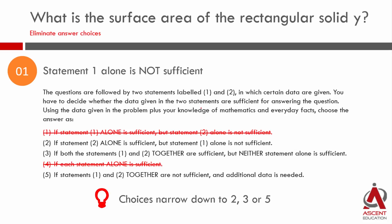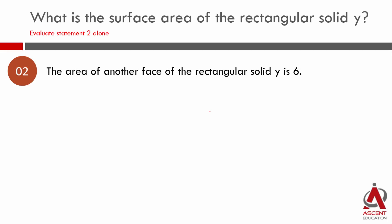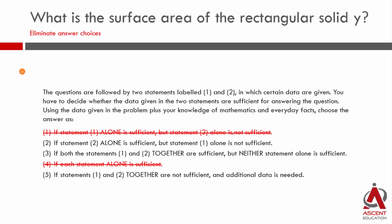Let's evaluate statement 2 alone. Statement 2 basically says the area of another face is equal to 6 square units. This is the opposite face because in rectangular solids, opposite faces' dimensions will always be the same. So this is 6 on the front face and 6 on the back face. The dimensions could be 6 into 1, or 2 into 3, or 1.5 into 4 - we don't know the third dimension, so the surface area is going to change. Statement 2 is also not sufficient. We can eliminate answer choice 2, so we are down to 3 or 5.